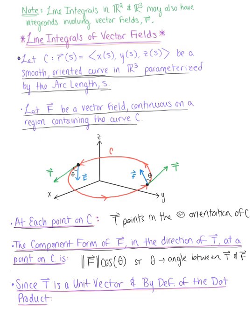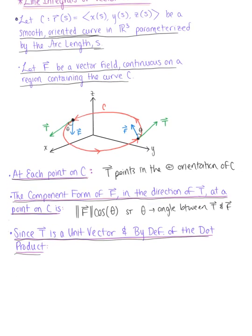So since we have that T as a unit vector and by the definition of the dot product, we can convert the component form of this vector field to the following. We are taking the component form, the magnitude of the vector field multiplied by cosine of theta.